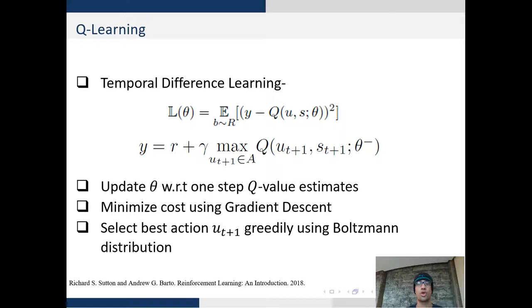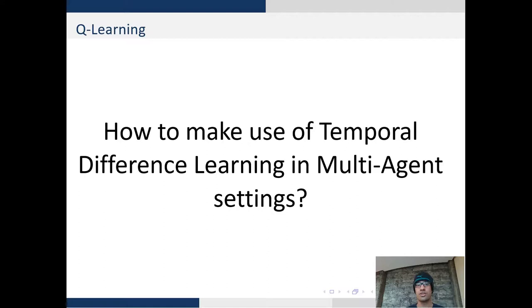So this is a cost function or the objective to be minimized. And we can use these Q-values by selecting some Boltzmann distribution and maximize over this probability. We use gradient descent generally for optimization.